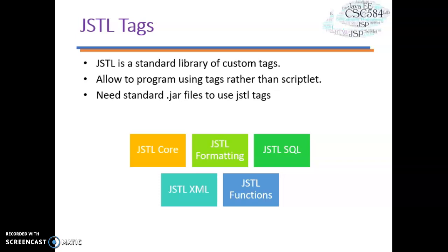What is JSTL? JSTL stands for JSP Standard Tag Library — a collection of JSP custom tags developed by the Java Community Process. JSTL allows you to program JSP pages using tags rather than scripted code. JSTL can do nearly everything that regular JSP scripted code can do. There are five common JSTL libraries: core, formatting, SQL, XML, and functions.